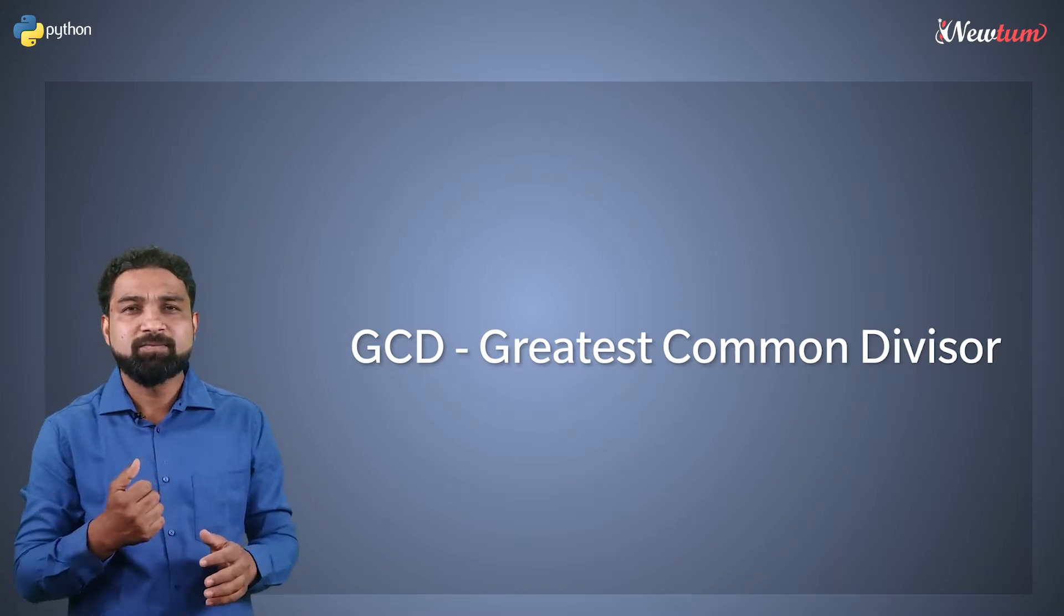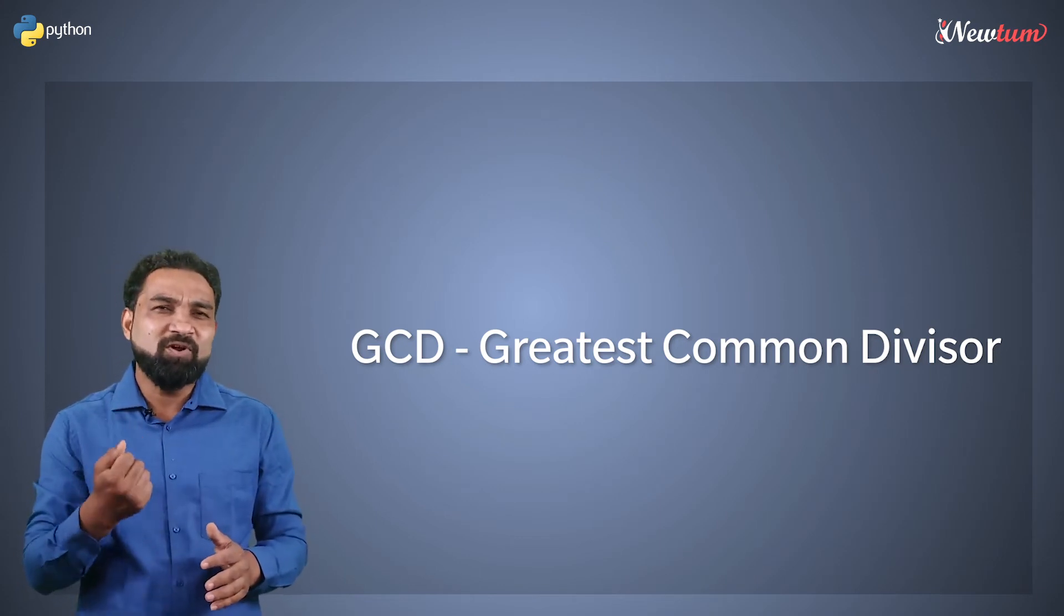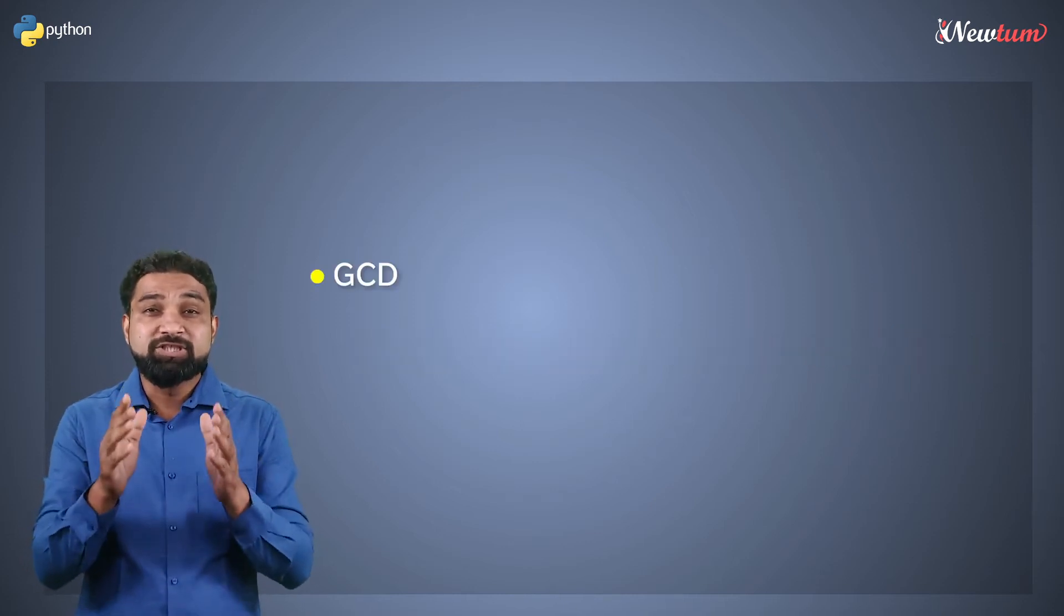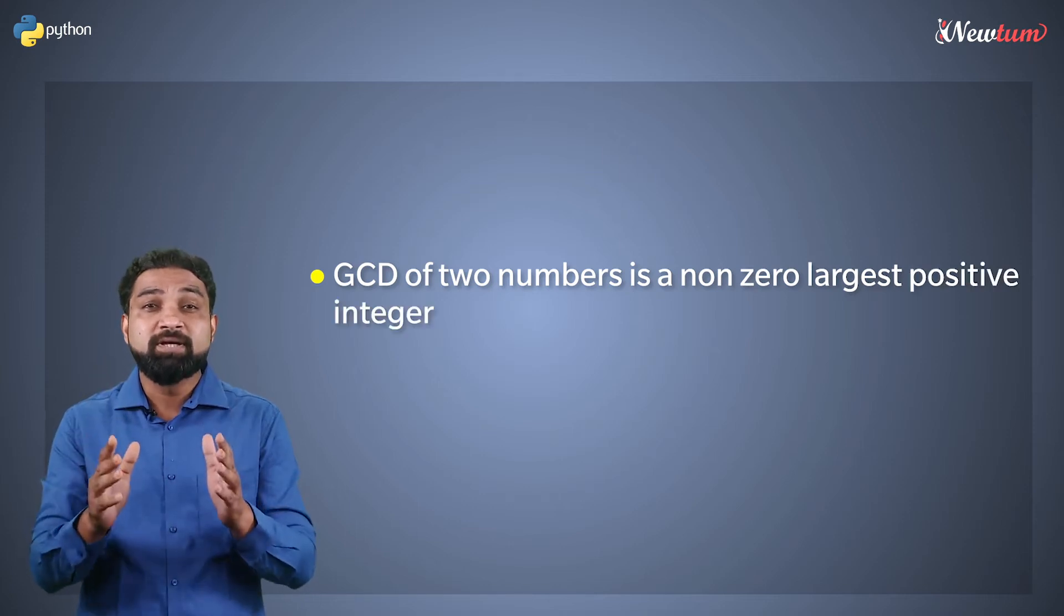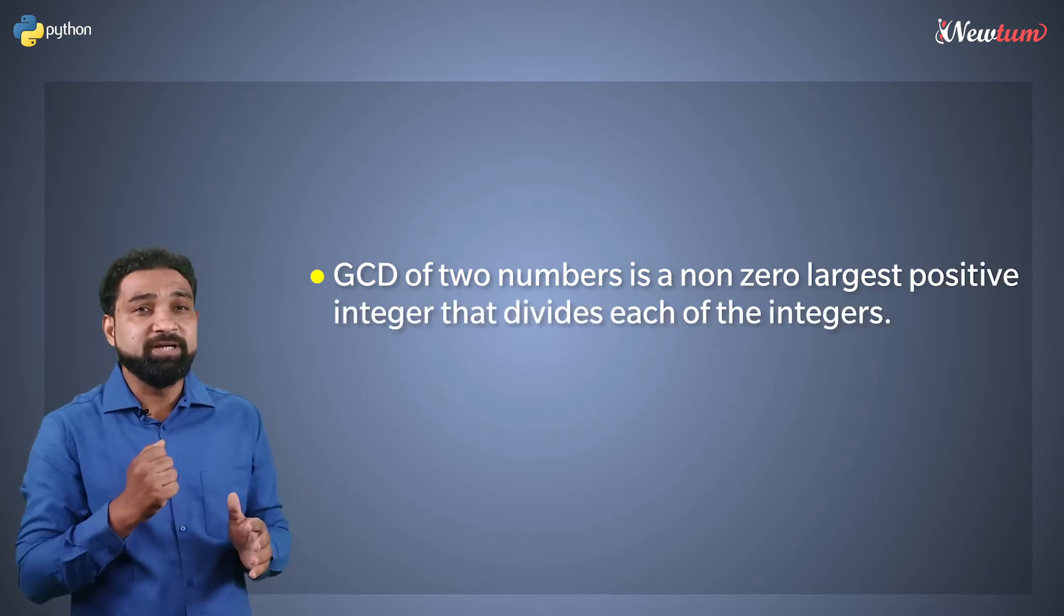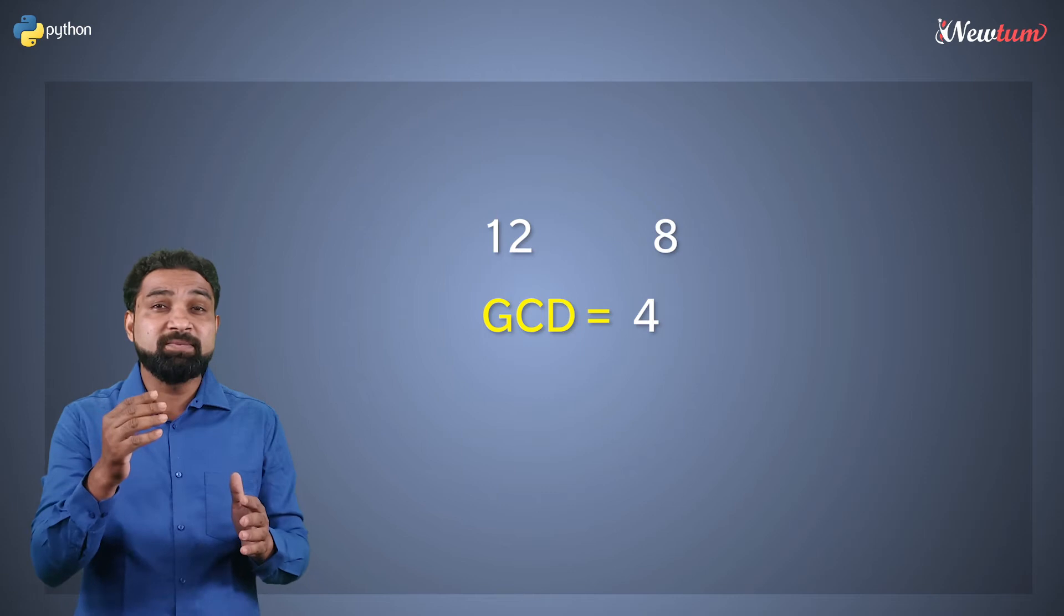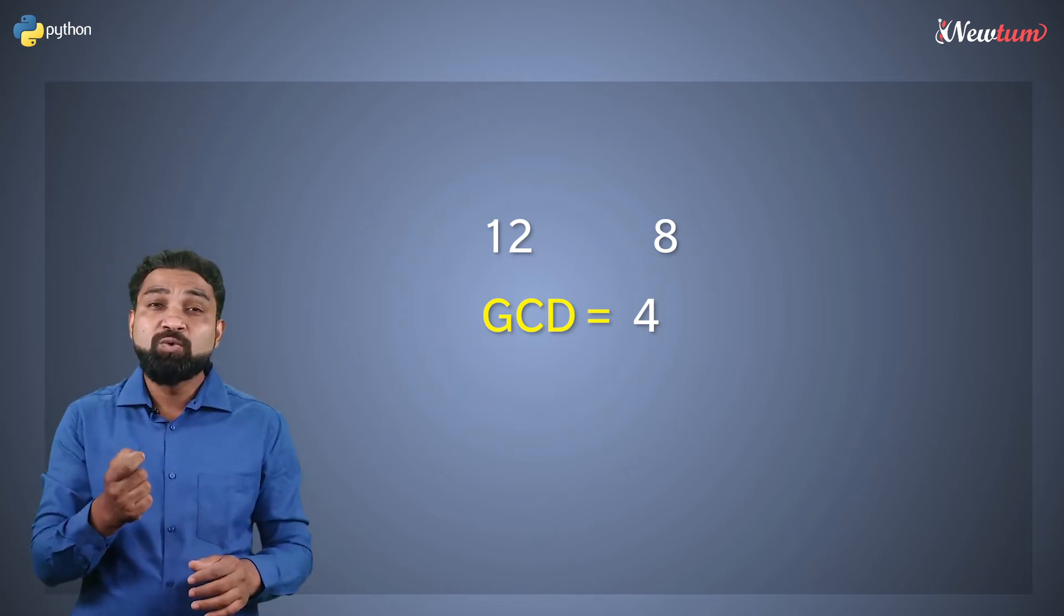What is Greatest Common Divisor? If you are good at mathematics, it's a cakewalk. If not, we will help you a bit. In mathematics, GCD of 2 numbers is the nonzero largest positive number that divides each of the integers. So GCD of 12 and 8 is 4, because GCD is the largest number that divides both 8 and 12.